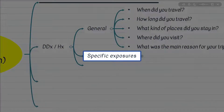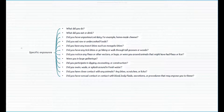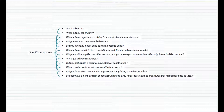Next is specific exposure during travel. Important history-taking questions include: What did you do? What did you eat or drink? Did you have unpasteurized products? Did you eat any undercooked or raw foods? Did you have any exposure to insects? Did you have any tick bites, or did you go hiking or walk through tall grasses or woods? Did you notice any fleas or other vectors or bugs around animals that might have had fleas or lice? Were you in large gatherings? Did you participate in digging, excavating, or construction? Did you swim, wade, or splash around in fresh water? Did you have close contact with any animals, bites, scratches, or ticks? And finally, did you have sexual contact or contact with blood, body fluids, secretions, or procedures that may expose you to these body fluids?